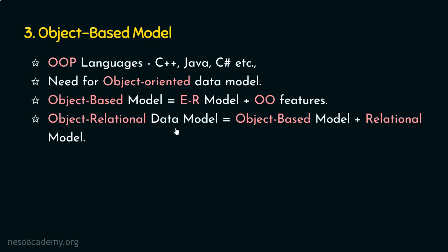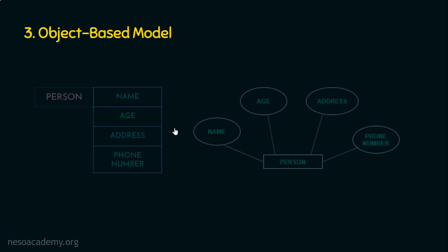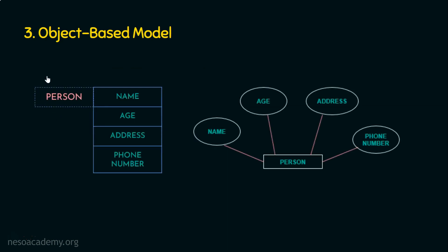Before we step into the fourth data model, let's see an example. In this example, person is an object which contains attributes like name, age, address, and phone number. This can also be represented as an ER representation — an entity or object 'person' which contains attributes like name, age, address, and phone number.